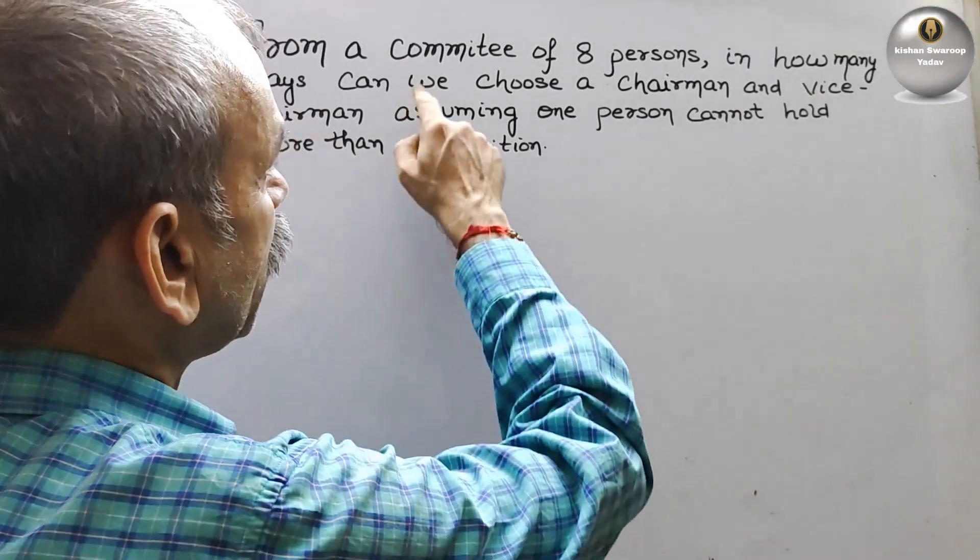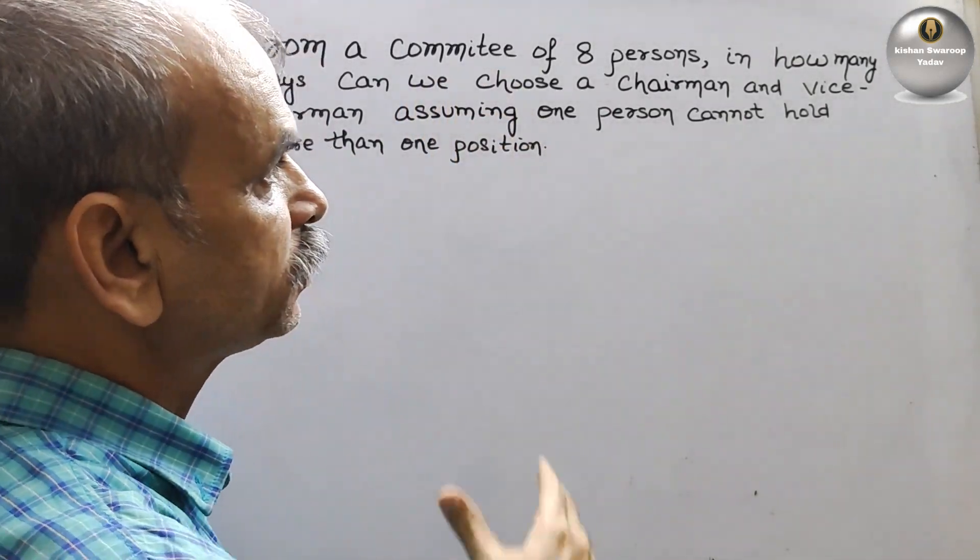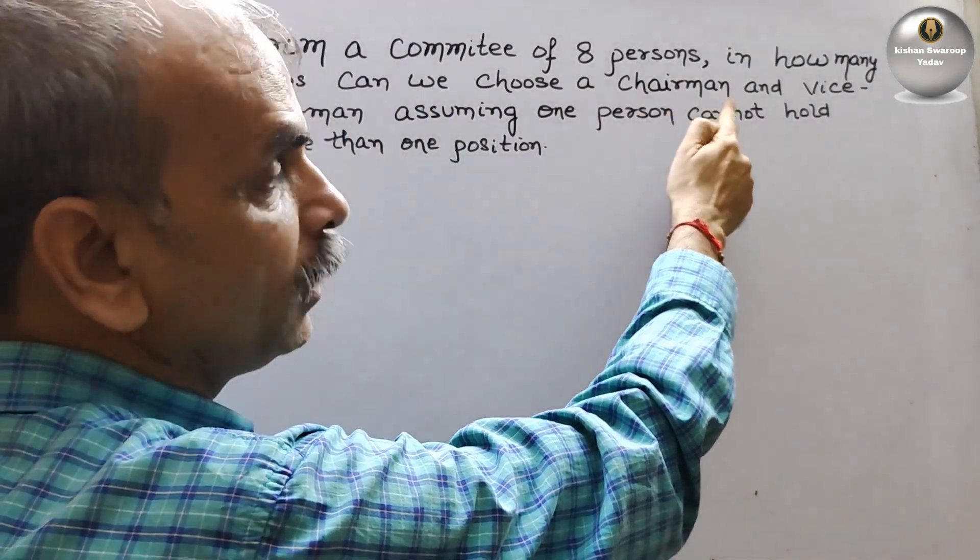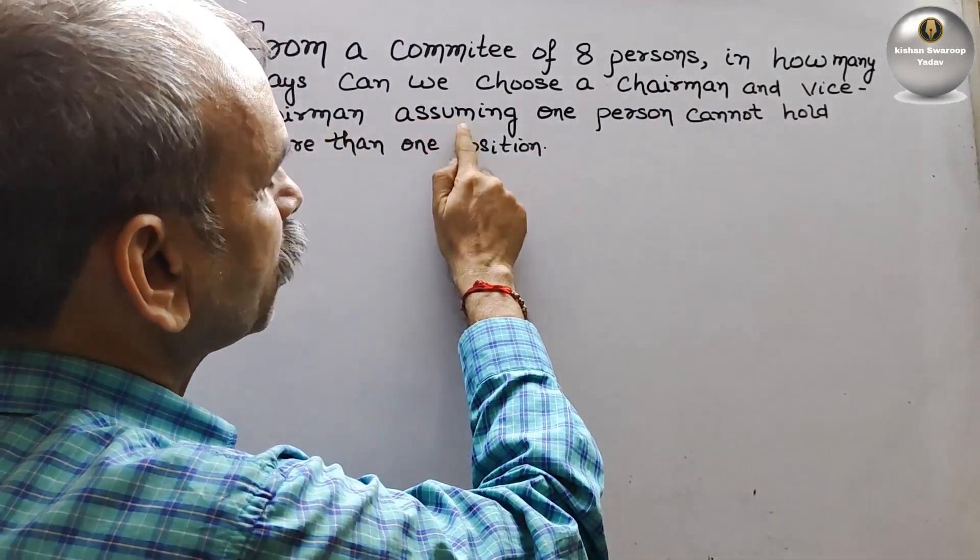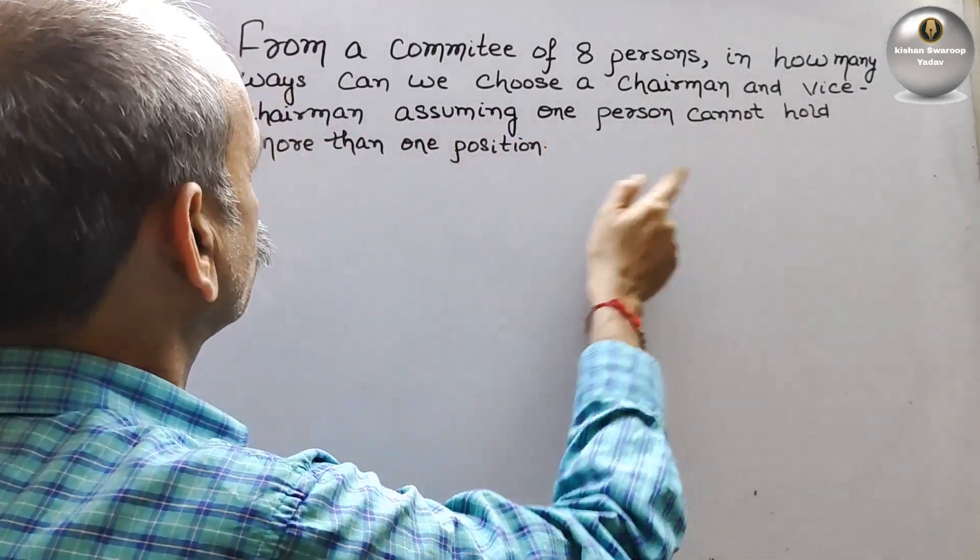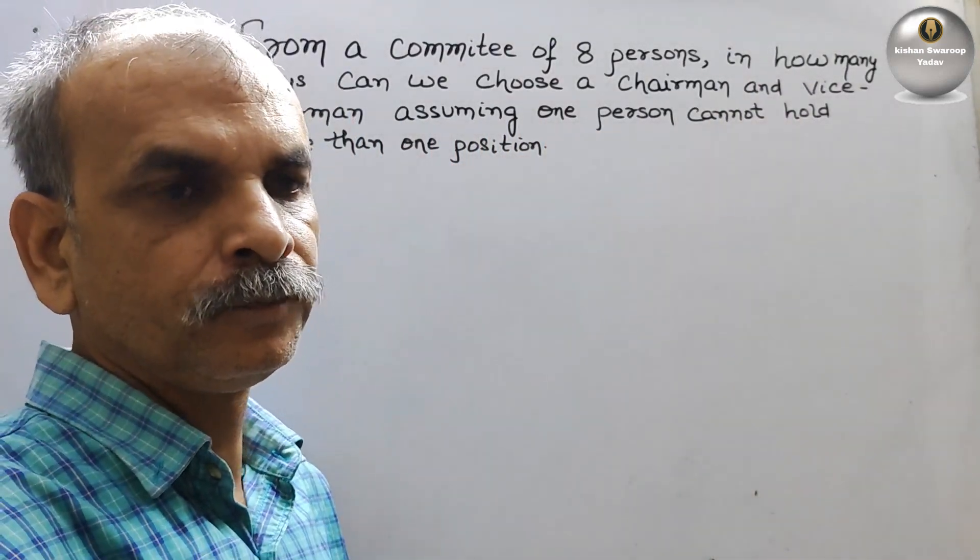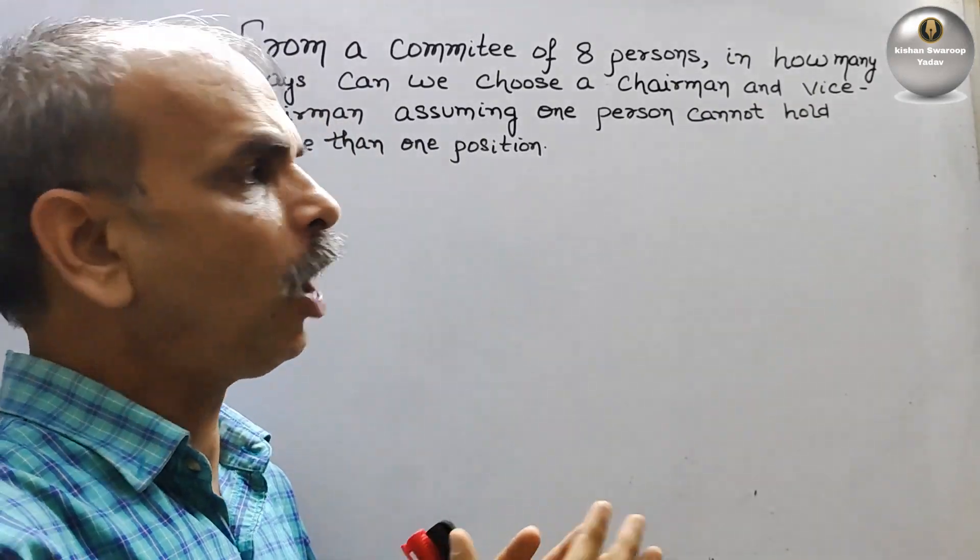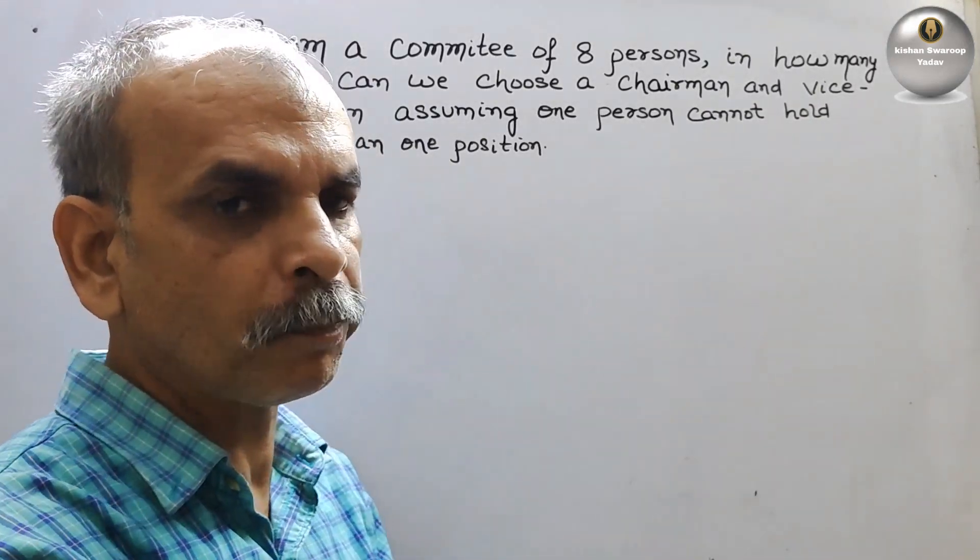Your question is from a committee of eight persons, in how many ways can we choose a chairman and vice chairman assuming one person cannot hold more than one position. So first we will go for number of ways, how we will solve it, then we will go for permutation.